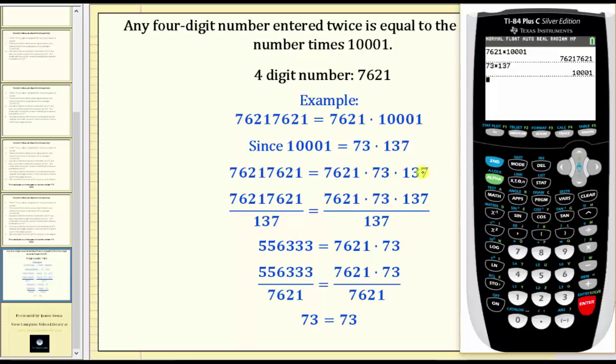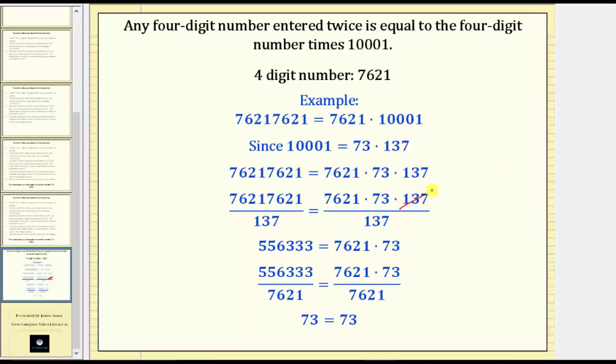Then remember, we divide it by 137. So if we focus on the quotient on the right, notice how 137 divided by itself simplifies to one, which means after dividing by 137, we can write the quotient as the product of the four-digit number and 73.